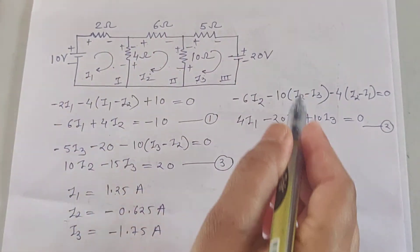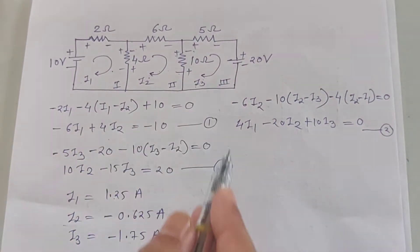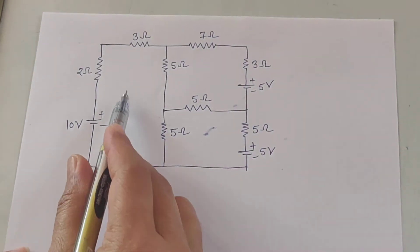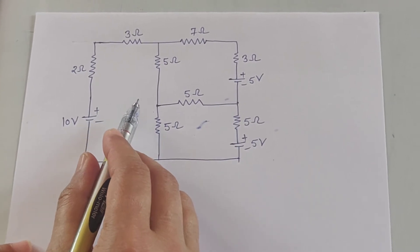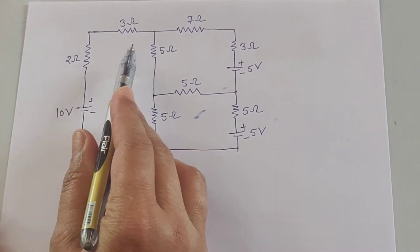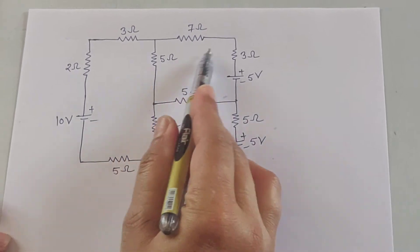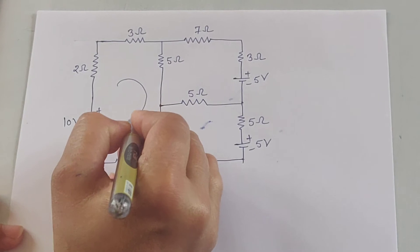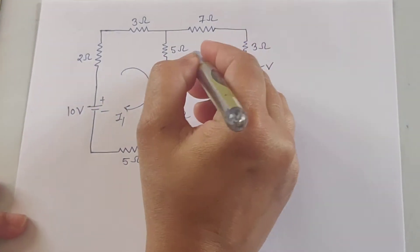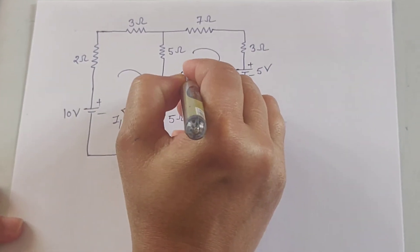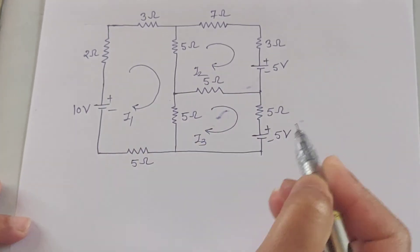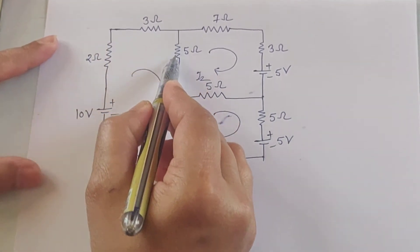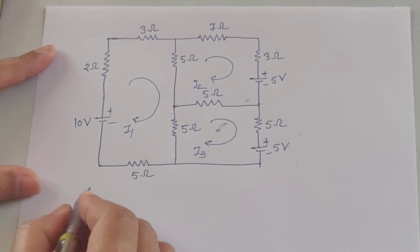This completes the first example of loop analysis. Now take the second example. A circuit is given and we have to find the loop currents. There are three loops: the first loop, second loop, and third loop. Mark the loop currents I1, I2, and I3, then apply KVL for the first loop.